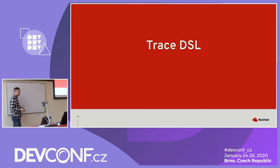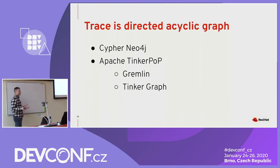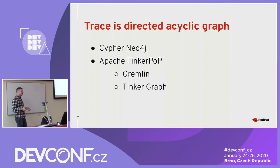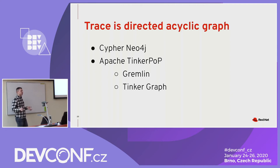About the trace DSL: a trace is a directed acyclic graph, so it makes sense to represent it as a graph. We tried two kinds of open source graph languages. First, Cypher from Neo4j — it's like SQL, a declarative language where you define the query and run it against the database. But our problem is that our storage doesn't expose a graph query API since we store spans as documents.